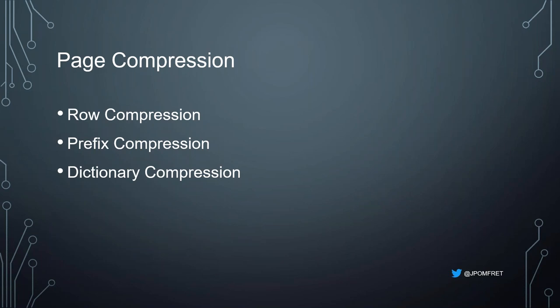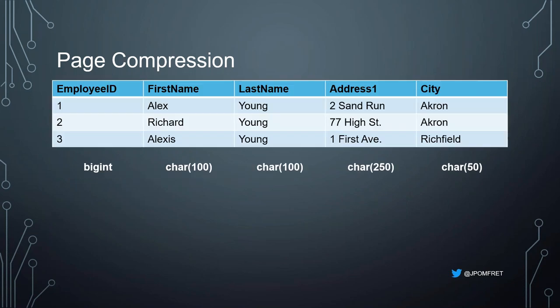Our next option is page compression. There are three stages, all handled by the engine — you just say page compress and it does it. The first step is row compression (removing white space, changing to variable-length). There are then two more stages: prefix compression and dictionary compression. Both techniques look at duplicate data and replace it with pointers.